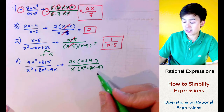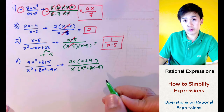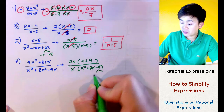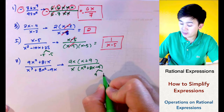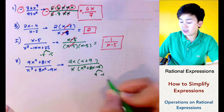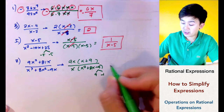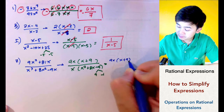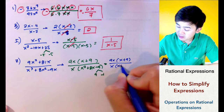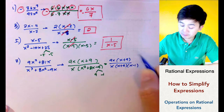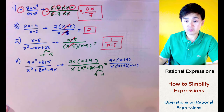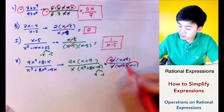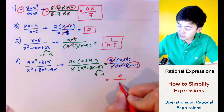Notice we have a quadratic in the denominator, so we apply a second factoring technique. Factoring x squared plus 8x minus 9 gives factors of x plus 9 and x minus 1, since 9 times negative 1 equals negative 9 and they sum to positive 8. The full expression becomes 9x times x plus 9, all over x times x plus 9 times x minus 1. Cancelling x plus 9 and x gives the simplest form: 9 over x minus 1.